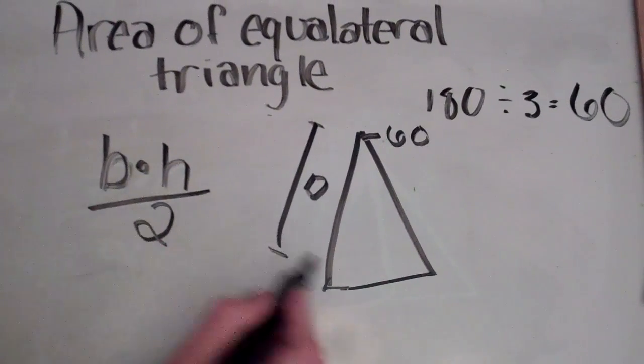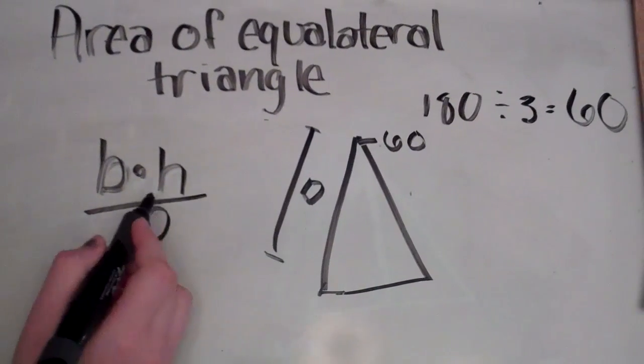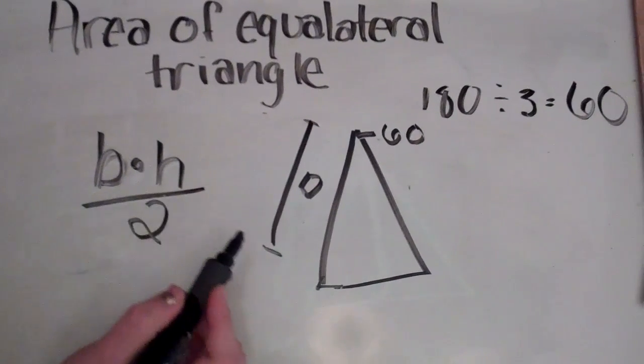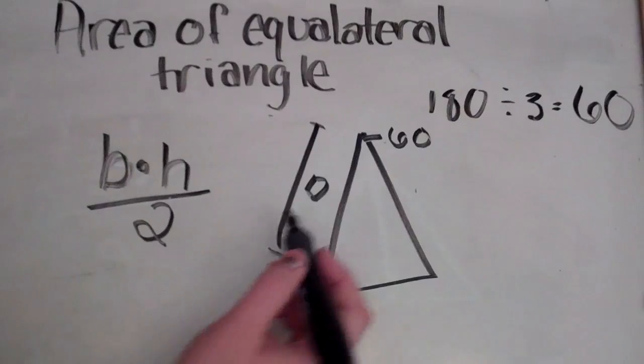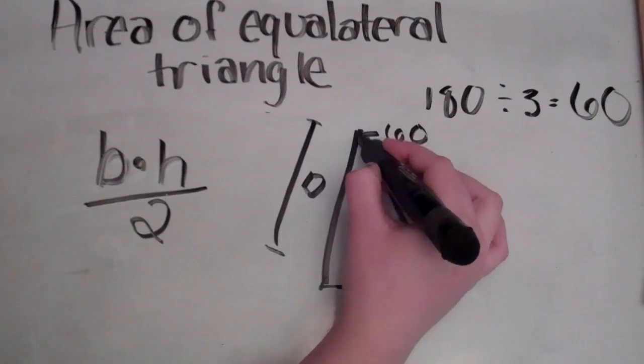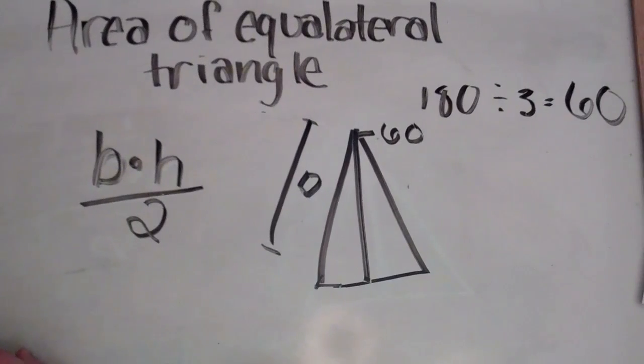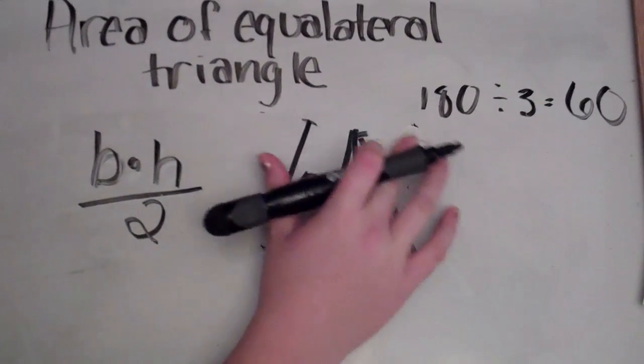We know our base is 12 units long, and the only variable we need to find is height. So, in order to find height, you need to draw a straight line from the vertex going straight down to the base of the triangle. This creates two new triangles.